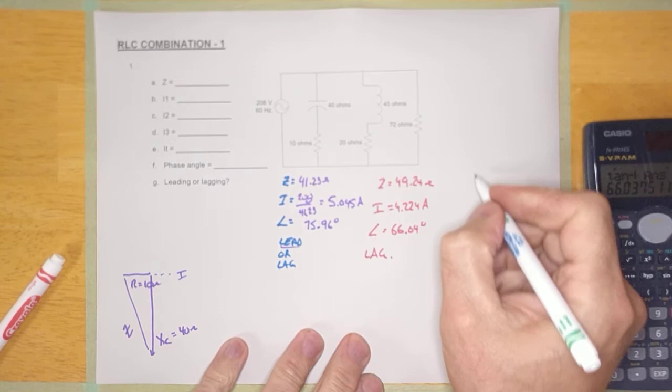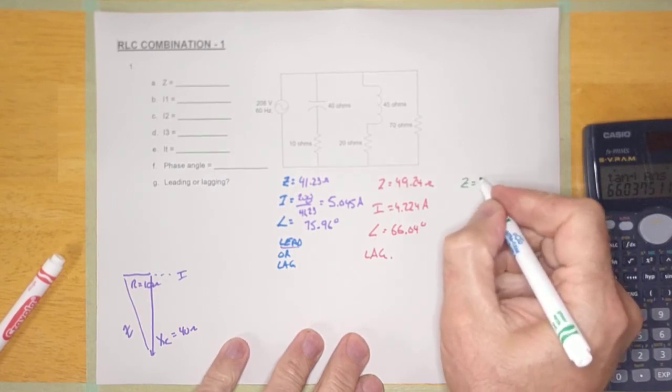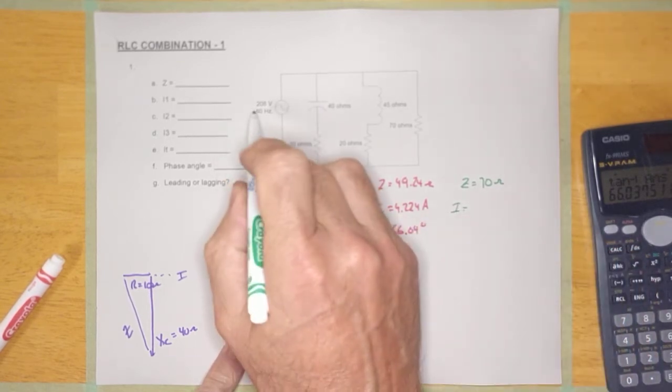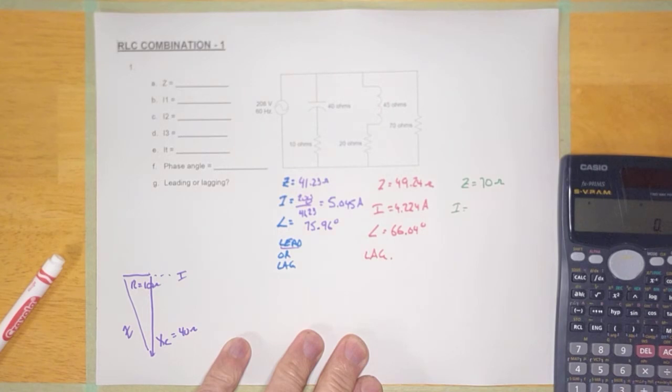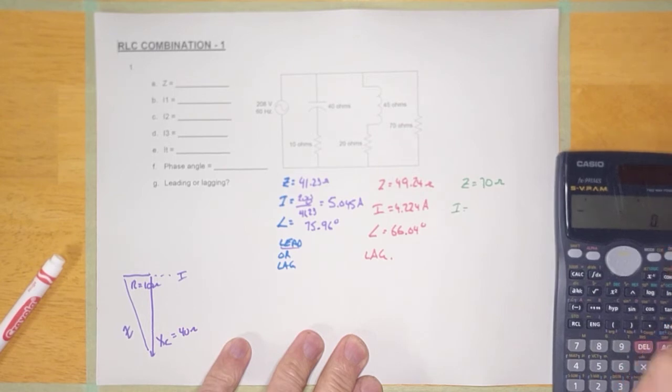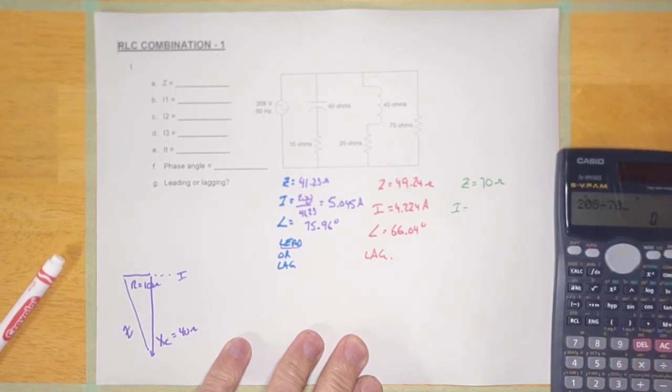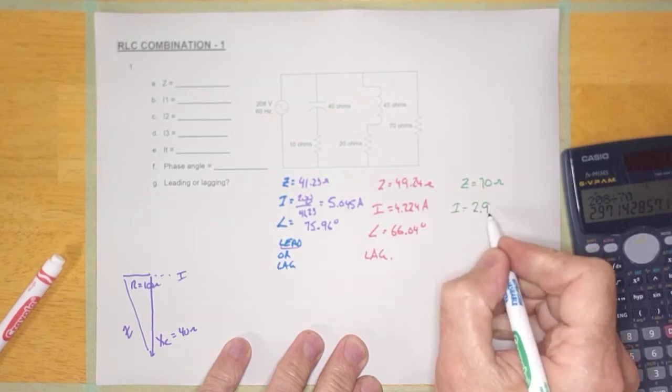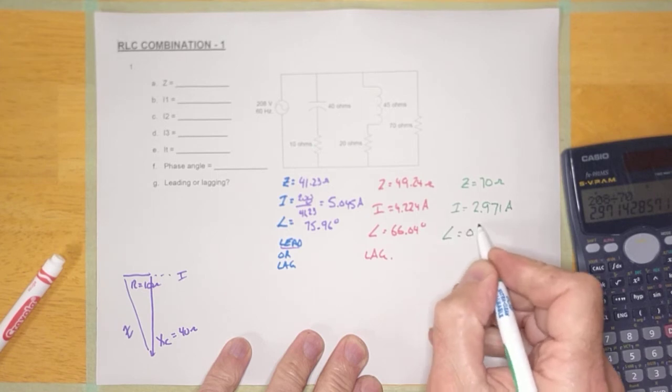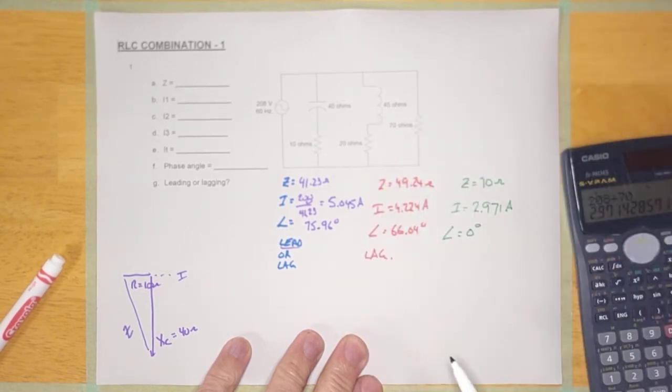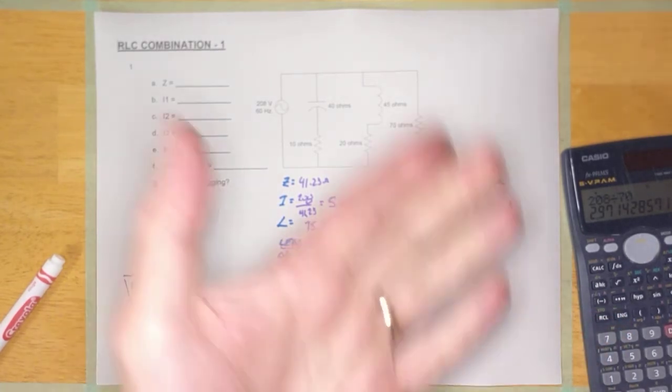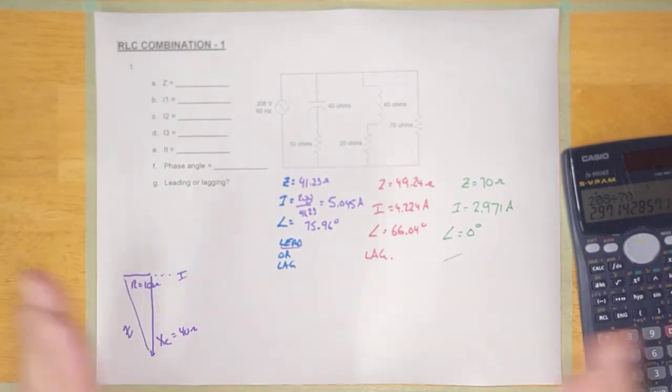So last rung here, the 70 ohmer. This one's easy. Z is just 70 ohms, because it's the only gadget in there. I, it's going to be E over Z. So it's going to be 208 divided by 70 equals. Looks like it's 2.971 amps. The angle is going to be zero degrees. So why zero? Well, because it's a resistor. It's in phase. So I don't have to worry about whether the circuit leads or lags at all because it doesn't lead or lag. Now, why did I figure this all out?